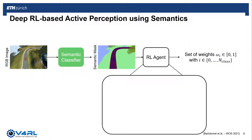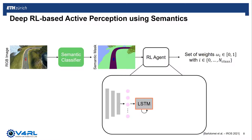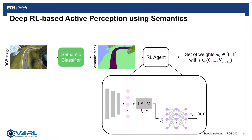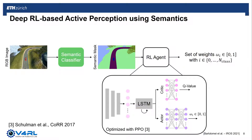In order to map the semantic mask to the set of weights, we model the RL agent as an actor-critic policy, composed of a set of convolutional layers followed by an LSTM. This memory module is employed to identify spatial relationships between the different classes, such as roads and cars, that would otherwise be hard to identify. The actor outputs the action, which corresponds to the weights in our case, and the critic outputs the Q value. The policy is then optimized in an episode-based fashion using the PPO algorithm.